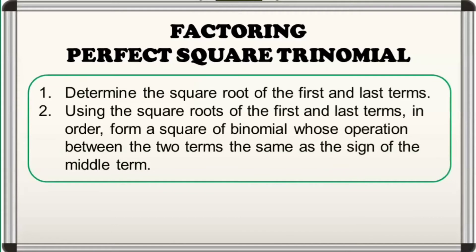This time, we'll talk about how to factor out PST. Here are the steps: 1. Determine the square root of the first and last terms. 2. Using the square roots of the first and last terms in order, form a square of binomial whose operation in between the two terms is the same as the sign of the middle term. To make the steps clearer, we'll have some examples.